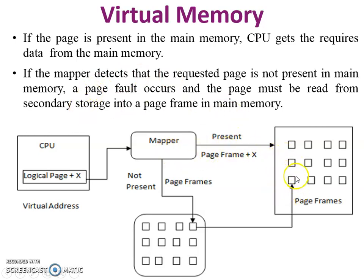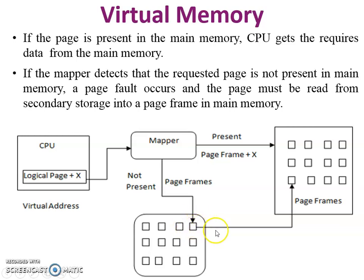If the mapper detects that the requested page is not present in main memory — meaning the page frame is not available — a page fault occurs. The page must then be read from secondary storage into a page frame in main memory. The mapper goes to secondary storage, finds the page frame, moves it to main memory, and finally gives it to the CPU.